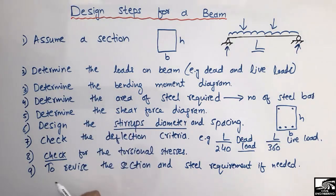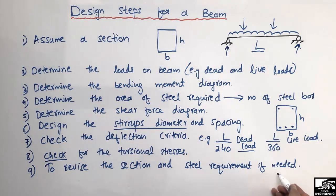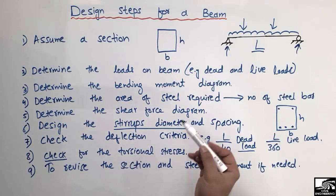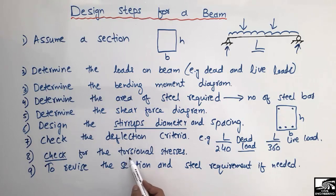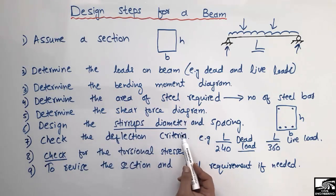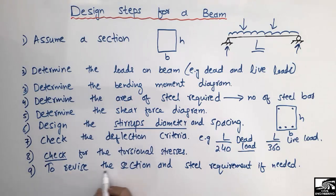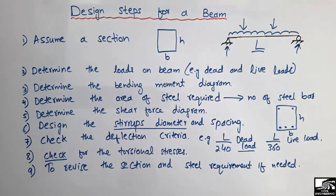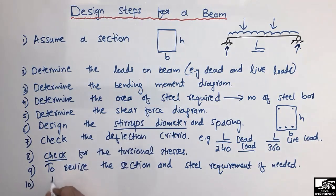The ninth step is to revise the section and check stress requirements if needed. If we require additional reinforcement — for example, for torsion stresses or to meet deflection criteria — we should increase the amount of reinforcement. We then revise all the relevant steps and provide the required reinforcement.